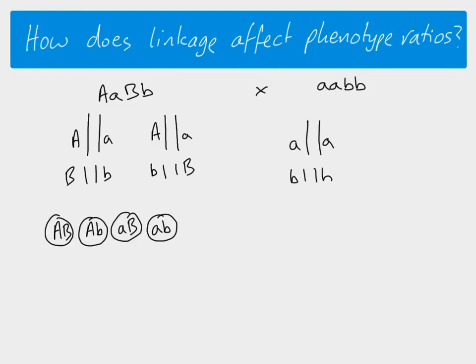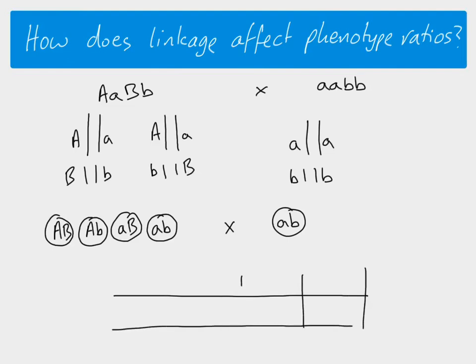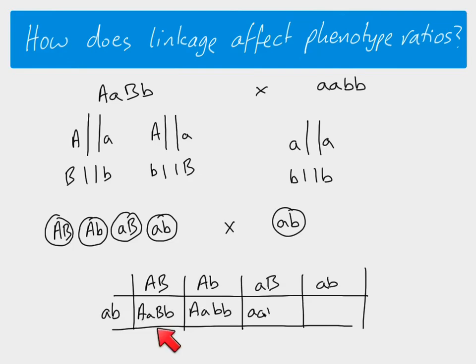With the homozygous recessive individual, because there's only one allele — one version of each gene — there's only one possible gamete. This is the unlinked comparison. If we do a Punnett square to find out what our ratios would be, we put our gametes on there and work out the genotypes of our offspring, remembering that each offspring has four alleles — two for each gene.